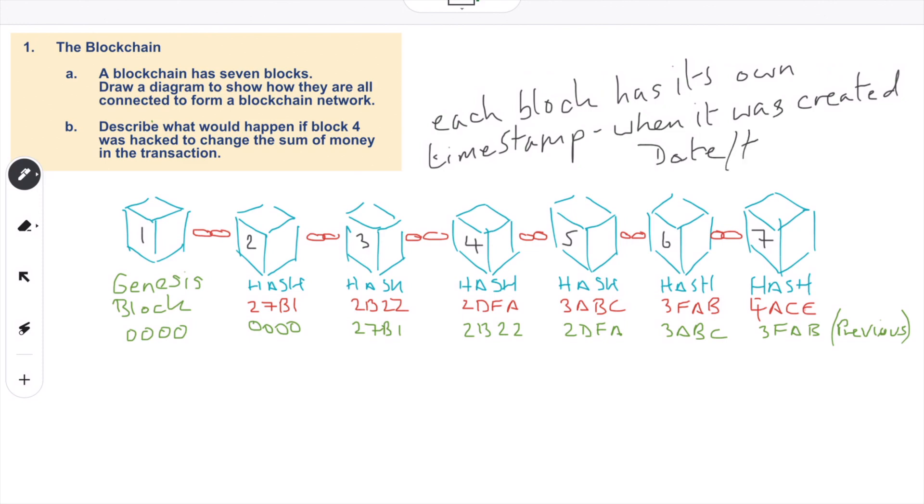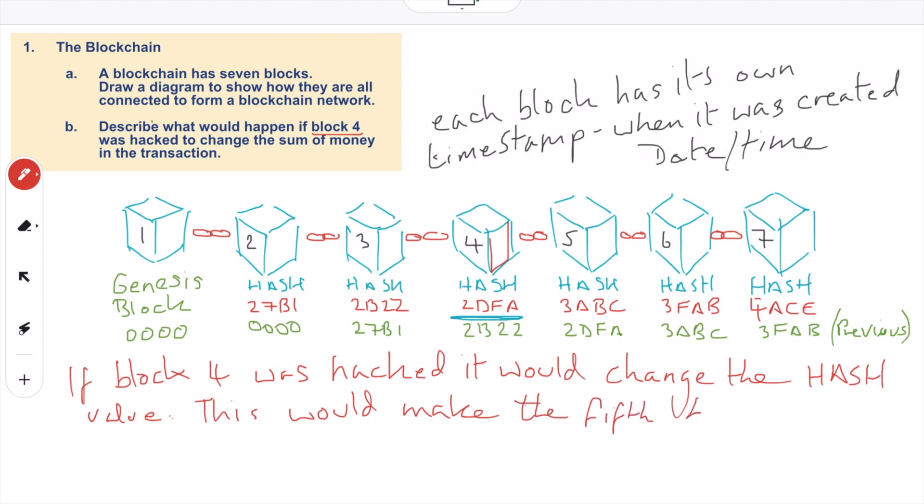So let's have a look at block four. Block four has got the hash value 2DFA, and then it's got the previous value from block three. So if block four was hacked, it would change the hash value, and then this would make the fifth block and all the following blocks invalid. Because block five has got the previous hash value, and if these don't correspond, then there's obviously a problem. And then that would change block five, and that would have a knock-on effect with block six, and so on and so forth. So the chain would become broken, and the transaction would become invalid.